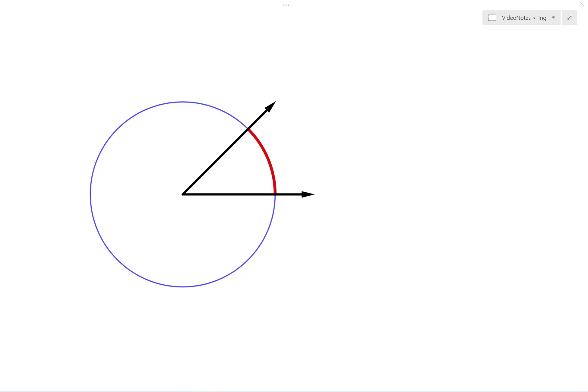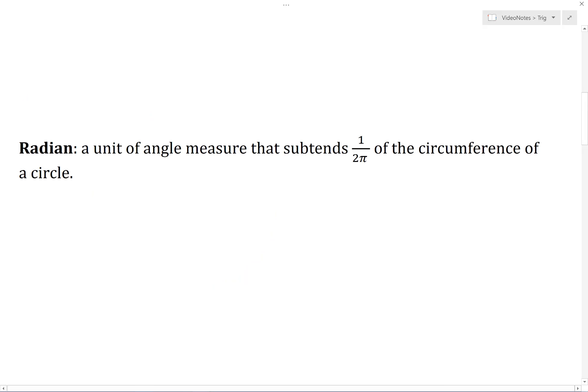Degrees are nice and something a lot of us are familiar with, but mathematicians prefer to use a different angle measure unit called a radian. A radian is a unit of angle measure that subtends 1/(2π) of the circumference of the circle.